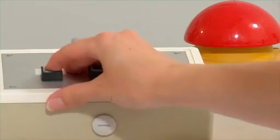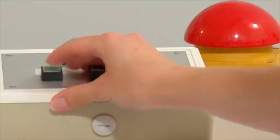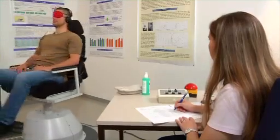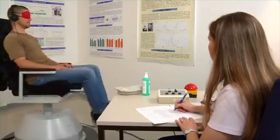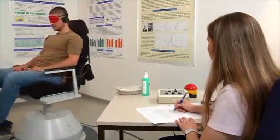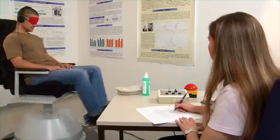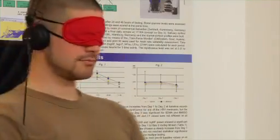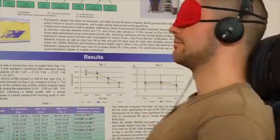Confirm that the participant is ready to begin, then start the rotation procedure. The rotation procedure consists of 5 runs, each with 2 minutes of rotation at a constant speed of 120 degrees per second and a 1 minute break in between the runs.